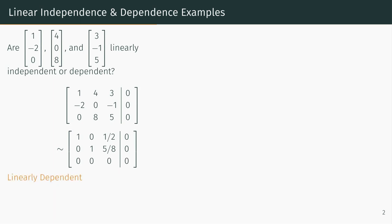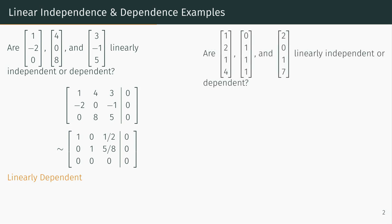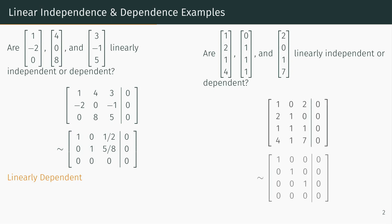Let's consider another example. The procedure for deciding if these three vectors are linearly independent or dependent is the same: put them in an augmented matrix and row reduce. We see that there are no free variable columns, and therefore the only way to write zero as a linear combination of the given vectors is if each coefficient is zero. Thus, these vectors are linearly independent.